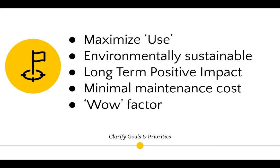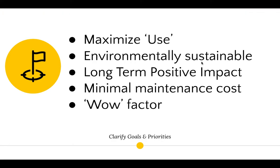Second step: goals and priorities. The city of Brampton would have thought through what they want to do with this land. One priority is maximizing its use — land is a very valuable and scarce resource, and you don't want to develop something that no one uses. Cities always have maximizing use as a priority, otherwise citizens will be outraged by the use of the land.